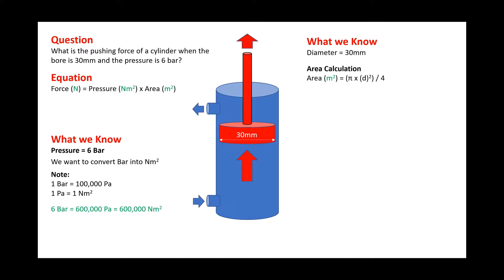By using the equation area equals pi times diameter squared divided by 4.